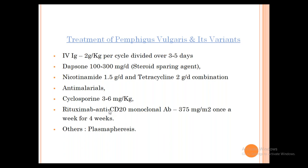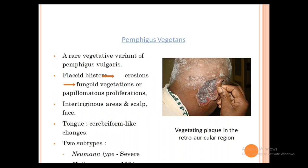Pemphigus Vegetans is a variant of Pemphigus Vulgaris. It starts as Pemphigus Vulgaris with flaccid blisters, but the erosions heal with fungoid vegetations and papillomatous proliferation, commonly in the intertriginous areas, scalp, and face. There is also a characteristic cerebriform change of the tongue. Two types: Neumann (severe) and Hallopeau (mild). Treatment remains the same: steroids and immunosuppressive agents.